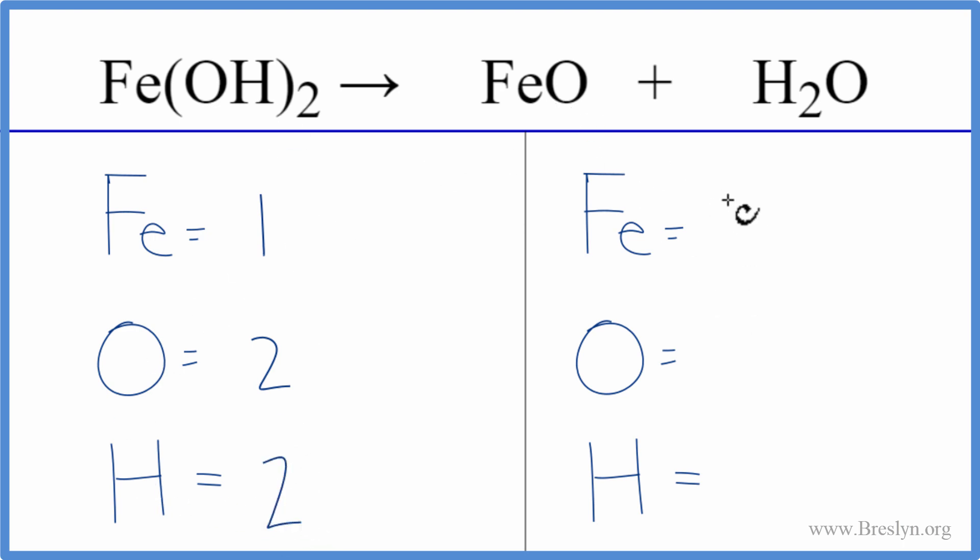On the product side, we have one iron and then one oxygen. Be careful, you have another oxygen right here. So we have to count both of those. That gives us two of those. The hydrogen, we have two of those.